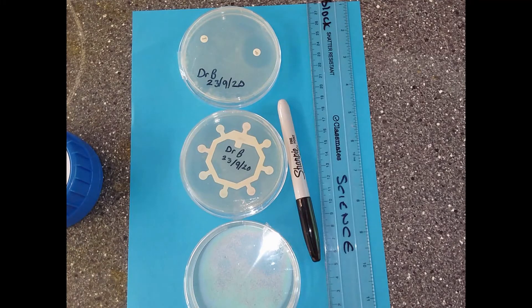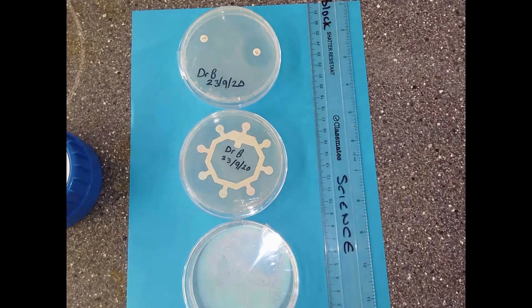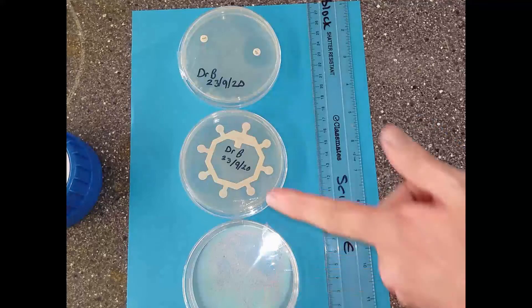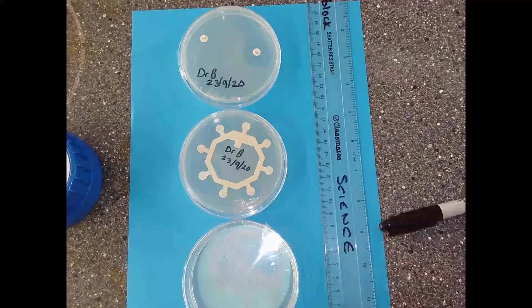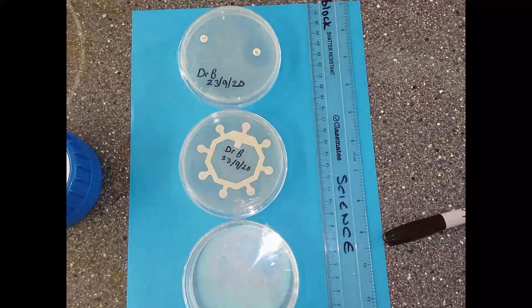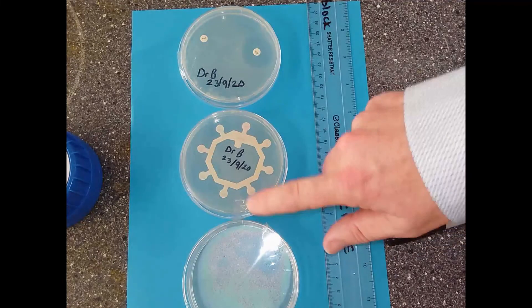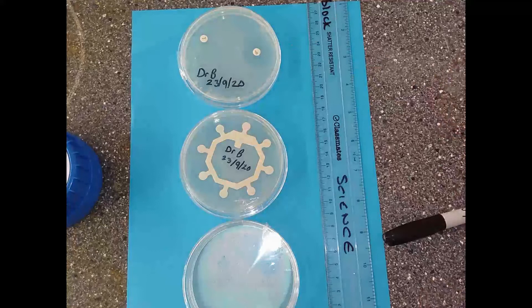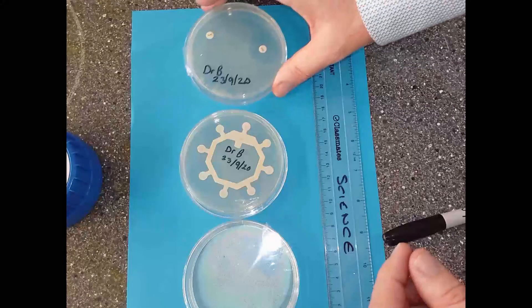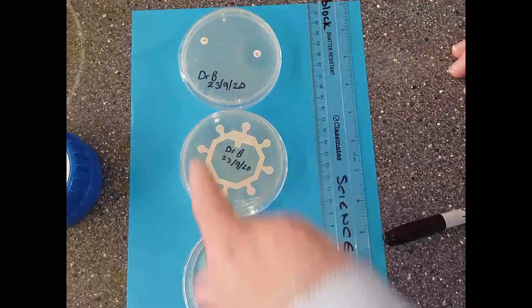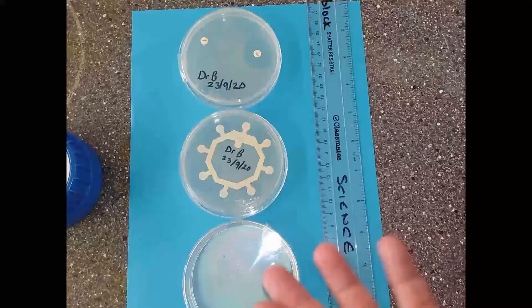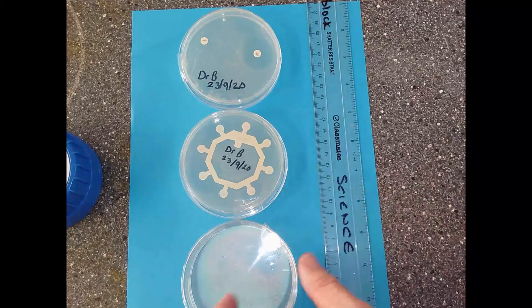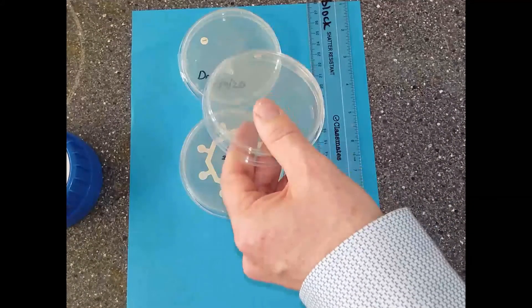This is day two, after 24 hours, and we've got our three agar plates. The first thing I'm going to say is that yesterday I forgot to tell you we needed to put two bits of sellotape on each of the lids just to keep the lids in place. I didn't seal the petri dishes because if I seal them, I'm going to stop oxygen getting in and I can actually grow some really dangerous microbes.